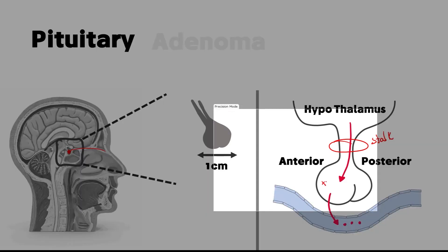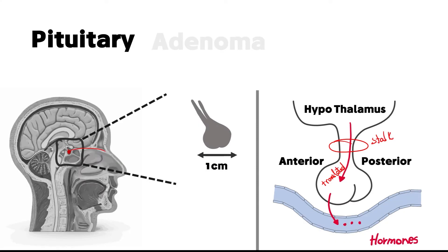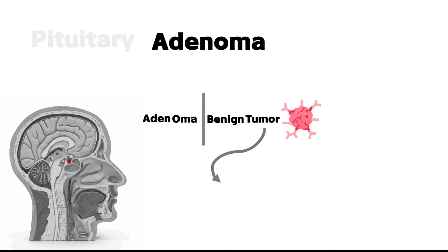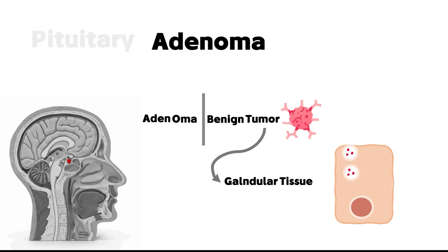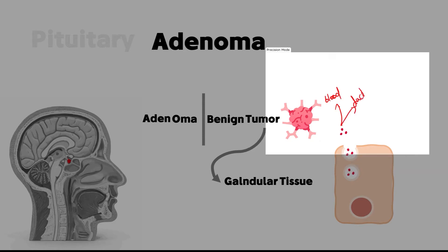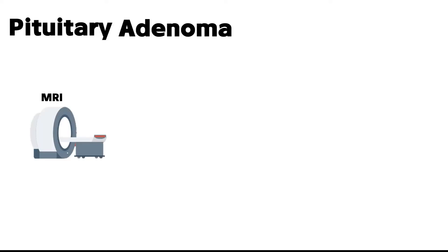The hypothalamus sends signals through this stalk, and these signals are translated especially in the anterior pituitary gland as hormones. Adenoma: 'oma' stands for tumor; adenoma stands for a benign tumor in glandular tissue, specifically in epithelial cells that commonly has a secretory function — either through the blood (endocrine) or through a duct (exocrine).